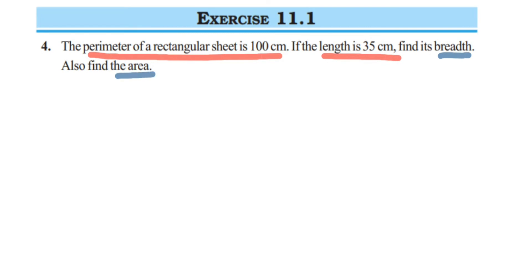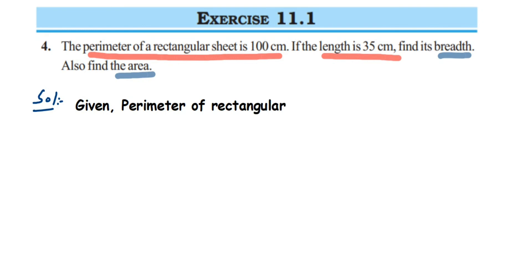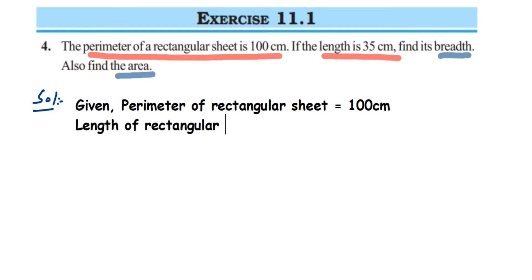This is somewhat similar to the third question — the way of finding the answer is similar. First, let's write down what is given in the question. Given: the perimeter of the rectangular sheet is equal to 100 centimeters. The second thing we know is the length of the rectangular sheet, which is equal to 35 centimeters.